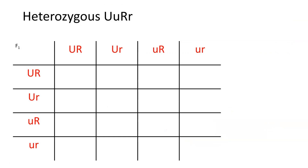If we transfer these to the Punnett Square, across the top we get UR, Ur, uR, ur. And since both parents are heterozygous in the same way, you would get the same thing going down the columns. Then what we do is add these together. Always start with one characteristic, use the capital letter of it first — it doesn't matter which column the capital comes from, it's going to give you that particular characteristic.